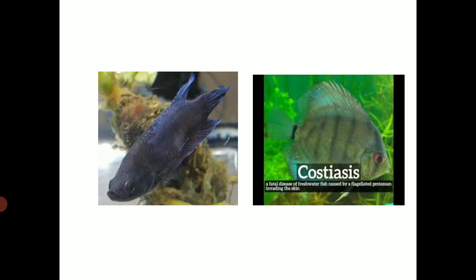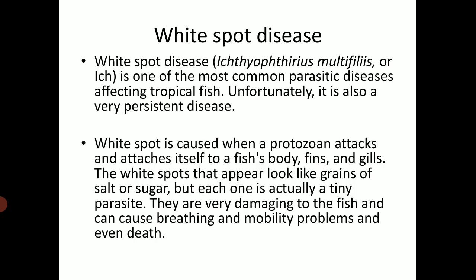These are the fish showing the Costia disease. Now we will move towards white spot disease. White spot disease, caused by Ichthyophthirius multifiliis or ICH, is one of the most common parasitic diseases affecting tropical fish. Unfortunately, it is also a very persistent disease. White spot is caused when a protozoan attacks and attaches itself to a fish's body, fins and gills. The white spots that appear look like grains of salt or sugar, but each one is actually a tiny parasite. They are very damaging to the fish and can cause breathing and mobility problems and even death.